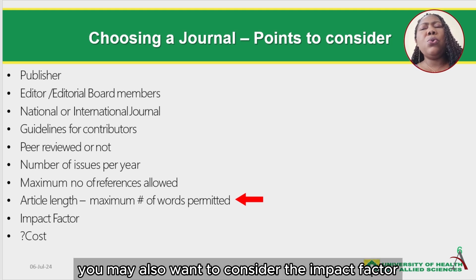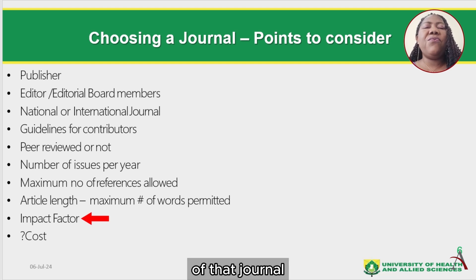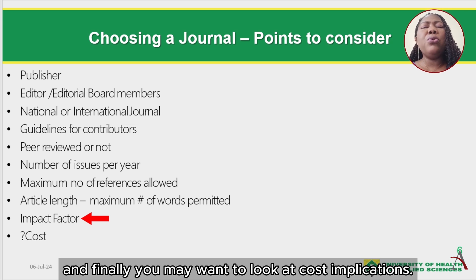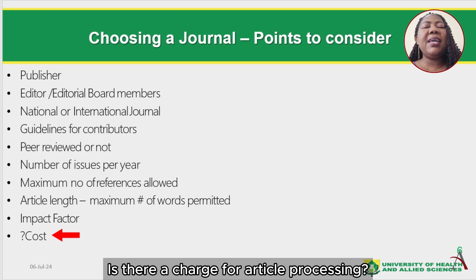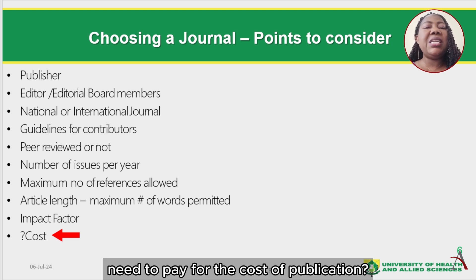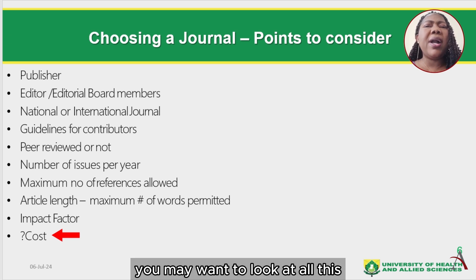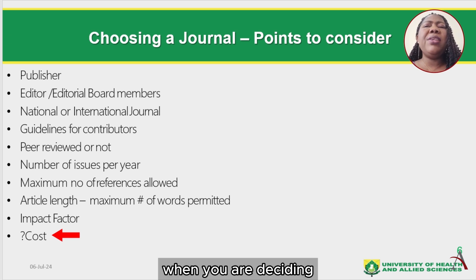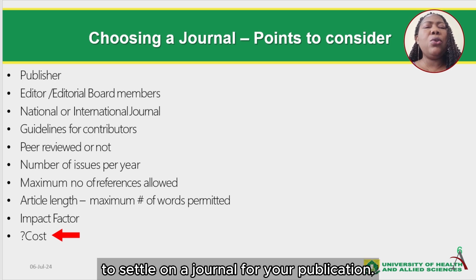You may also want to consider the impact factor of that journal. And finally, you may want to look at cost implications — is there a charge for article processing, the APC? Is there a cost of publication? You may want to look at all this when you are deciding to settle on a journal for your publication.